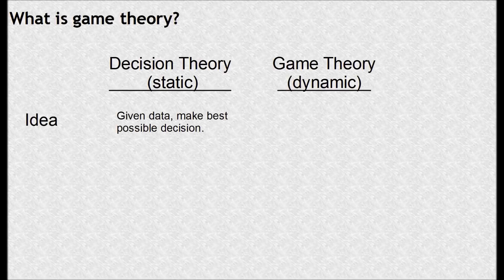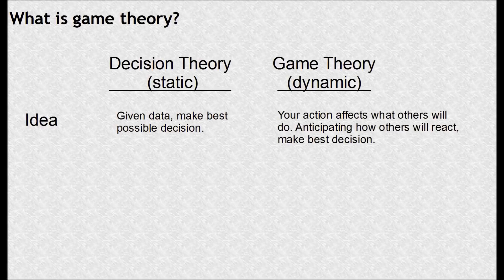The general idea in decision theory is that given a list of data or given a set of circumstances, you want to make the best possible decision. Game theory is much like that, but it's dynamic — you can't just say the data is given. What you do will affect how others will react, so you need to think strategically and anticipate how others will react to make the best decision.